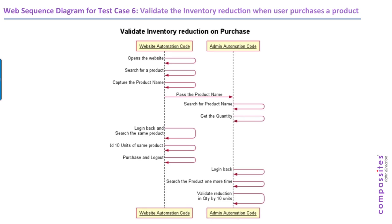The sixth test case combines front-end and back-end testing. It opens a website, searches for a product, captures the product name, and passes it to the admin/CMS side to check the total quantity in inventory. It then goes back to the website, checks out 10 items, logs out, and as admin, searches the same product to validate that the quantity has reduced by 10. This is essentially a database validation test case.